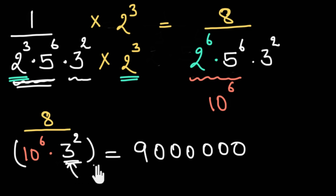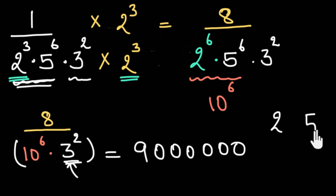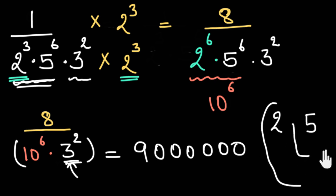So now I hope this idea of having only 2s and 5s in the rational form of a terminating decimal expansion is clear.